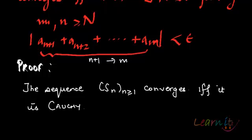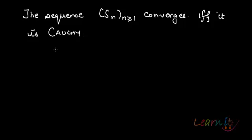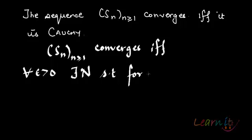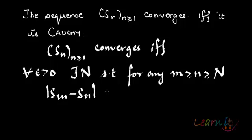That means the sequence Sn converges if and only if for all epsilon greater than 0, there exists a natural number N such that for any m, n ≥ N, we have |S_m - S_n| < epsilon.